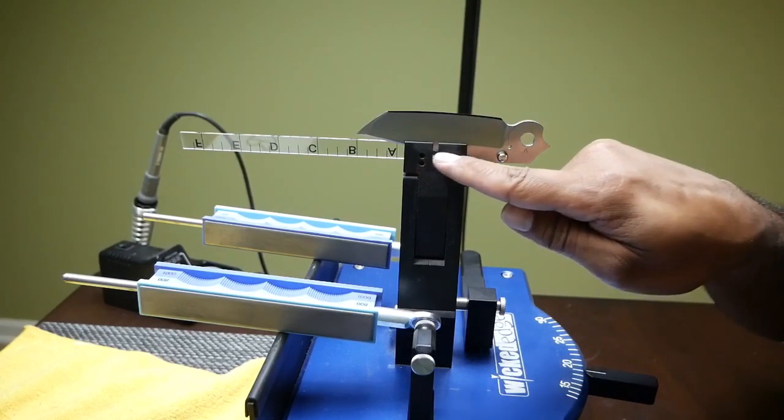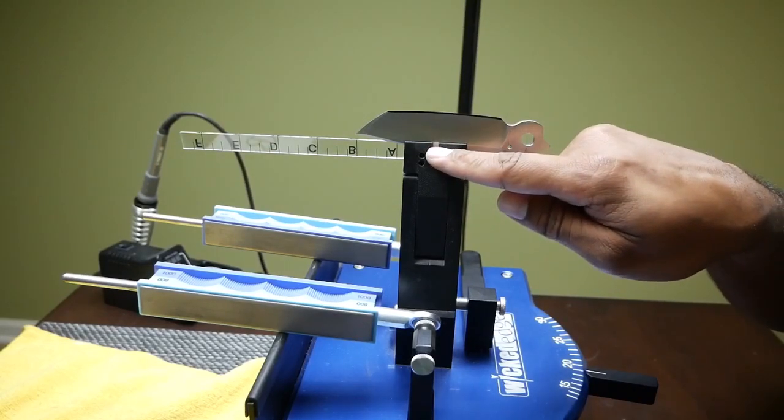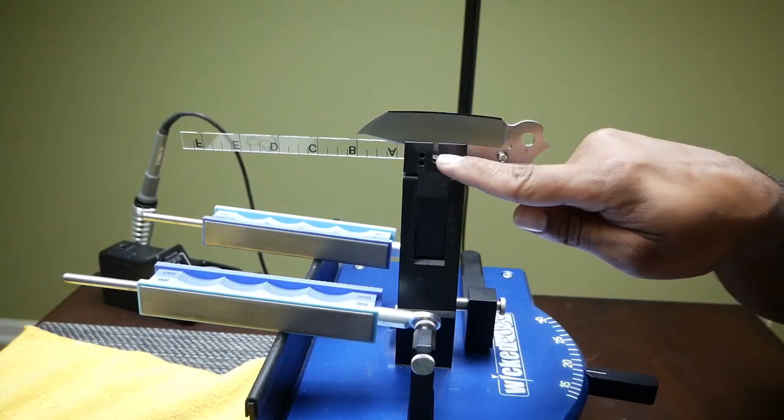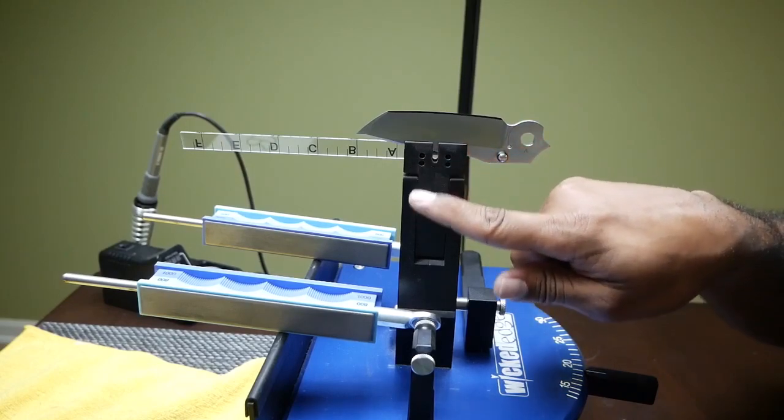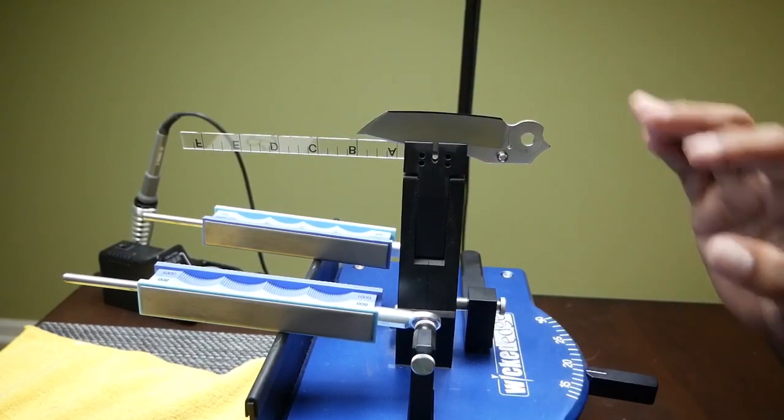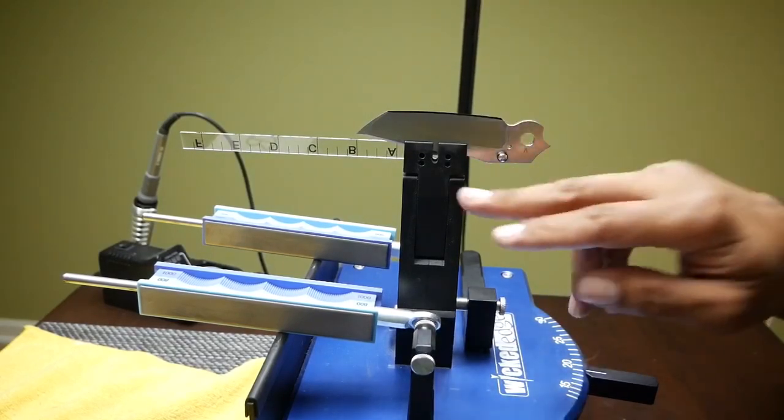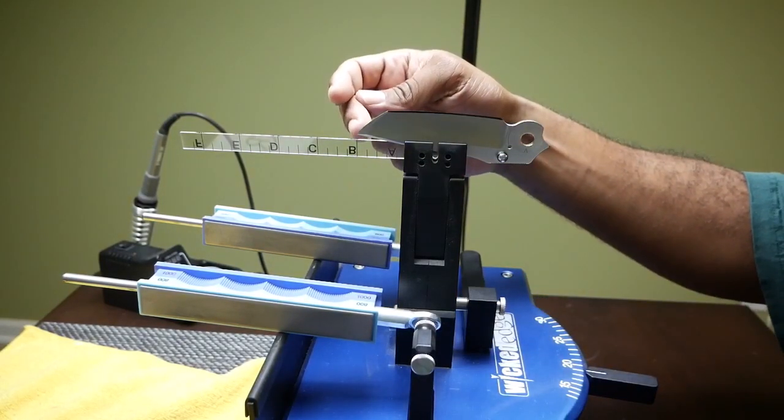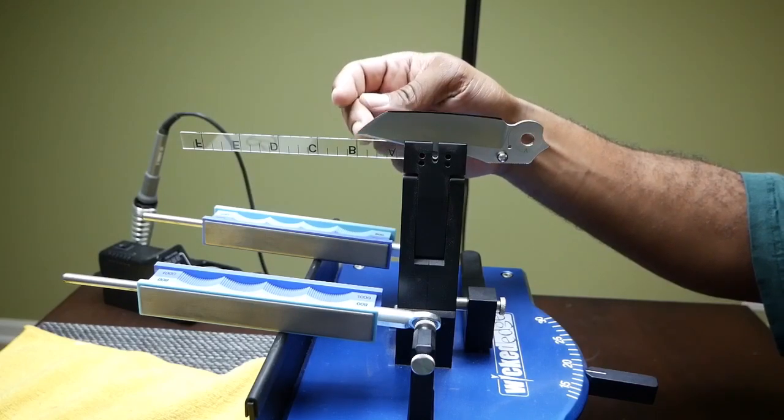I have it on the upper holes right here. The reason I did that is because at 15 degrees per side, the stones were very close to these jaws and I just wanted more clearance. So I raised it up to the top setting and you can see clearly that the tip of the knife is at B.